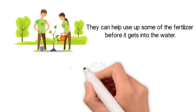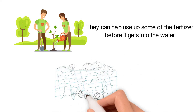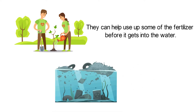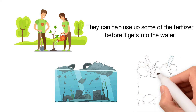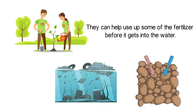Conservation tillage is another farming practice that prevents dead zones. Farmers reduce soil loss by tilling their fields less often. As the soil becomes more compacted, there will be less runoff.